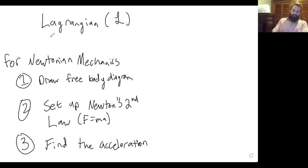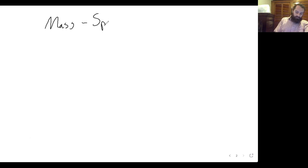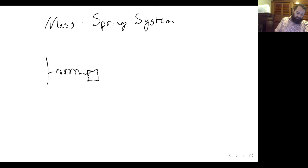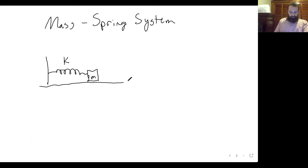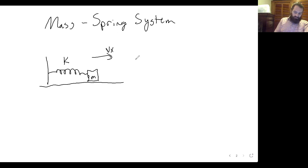This is the procedure for Newtonian mechanics. Now for the procedure for Lagrangian mechanics, the first system we'll start with will be a mass-spring system. There's a wall that a spring is attached to, with a mass m on that spring with spring constant k. The mass is free to move in the x direction, so it has some velocity in the x direction when it's moving, giving it some kinetic energy, which I'm going to label with the capital letter T.